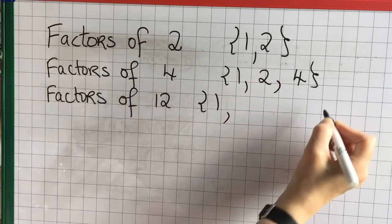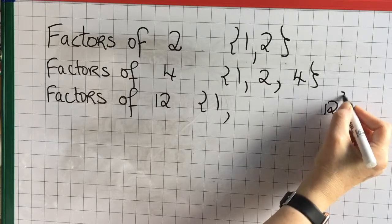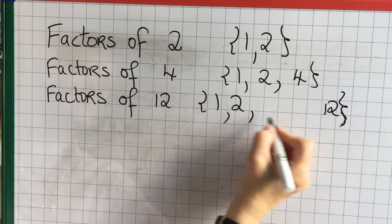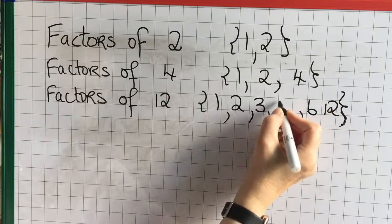The factors of 12 are 1 and 12. And 2 divides into 12 six times, so 2 and 6 are factors. And 3 divides in 4 times.